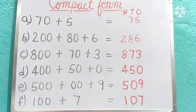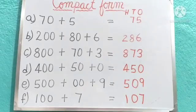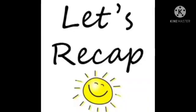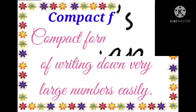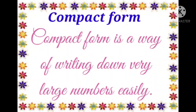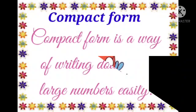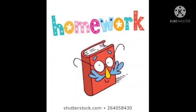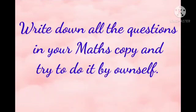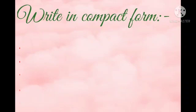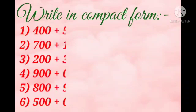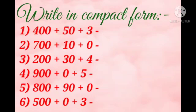Now all the questions you will note down in your copy and do them. Let's recap: compact form is a way of writing down very large numbers easily. Note down your homework — write all the questions in your maths copy and try to do them by yourself. That's all for today's class.